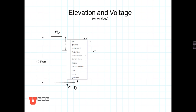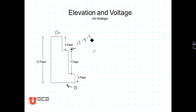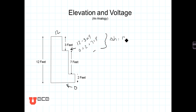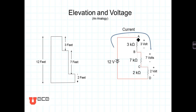So that point is 12 minus 3 equals 9 feet. We could also say it equals 0 plus 2 plus 7, which equals 9. We can also talk about the elevation difference between two points: delta h equals 12 minus 9, which equals 3 feet.